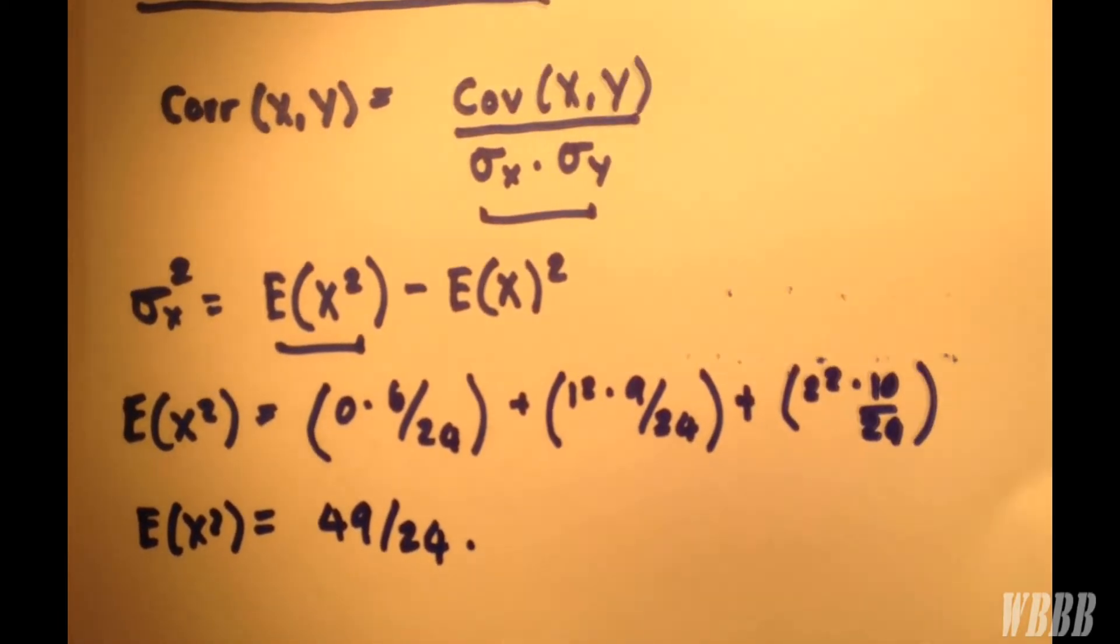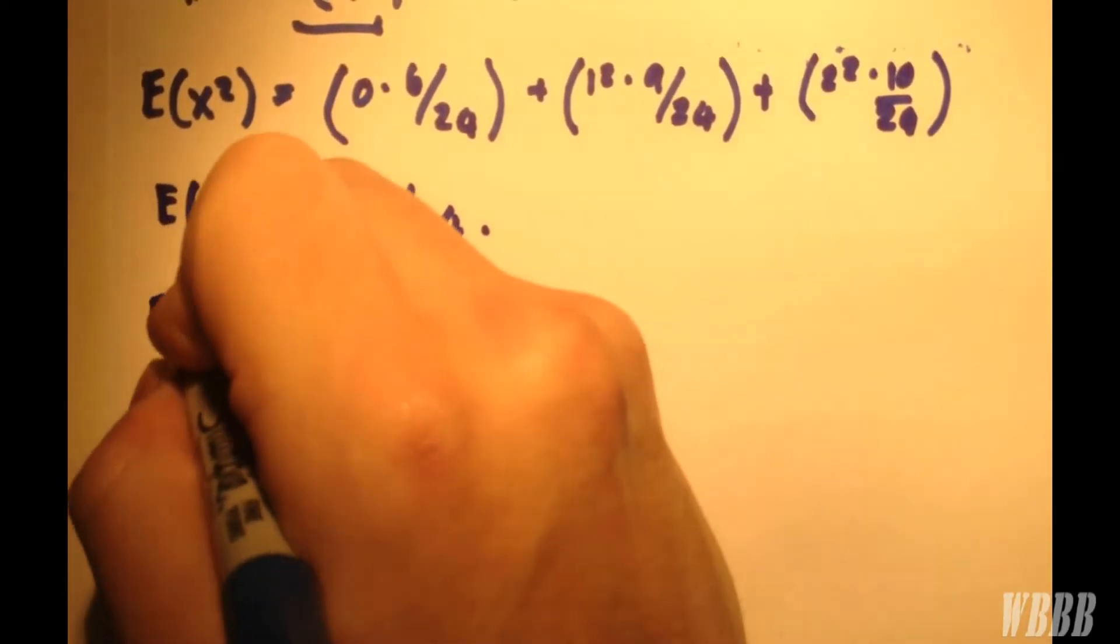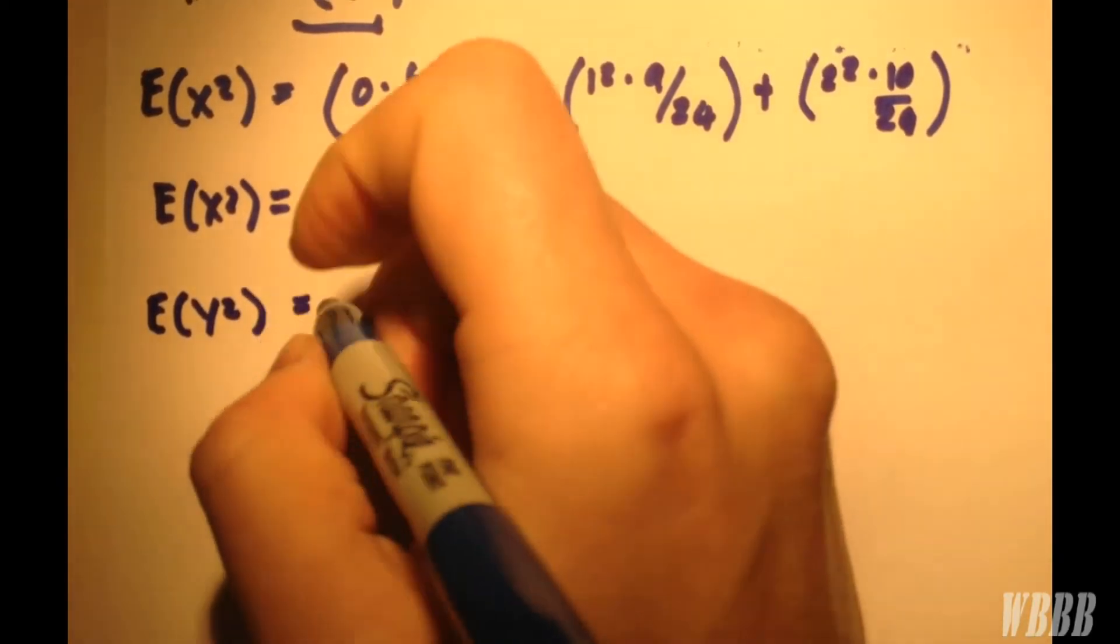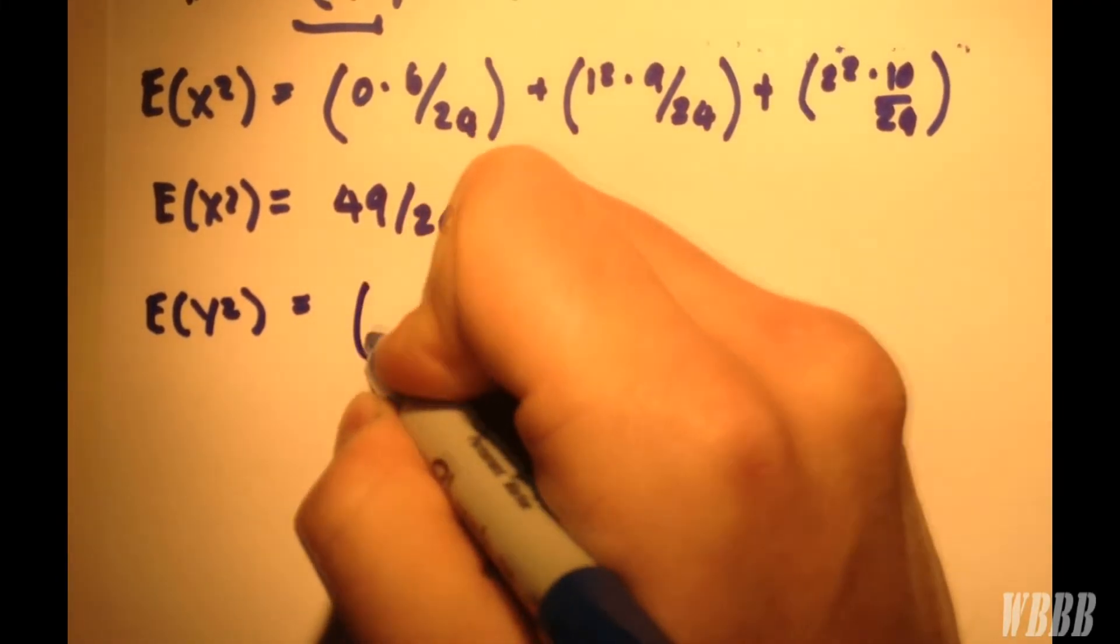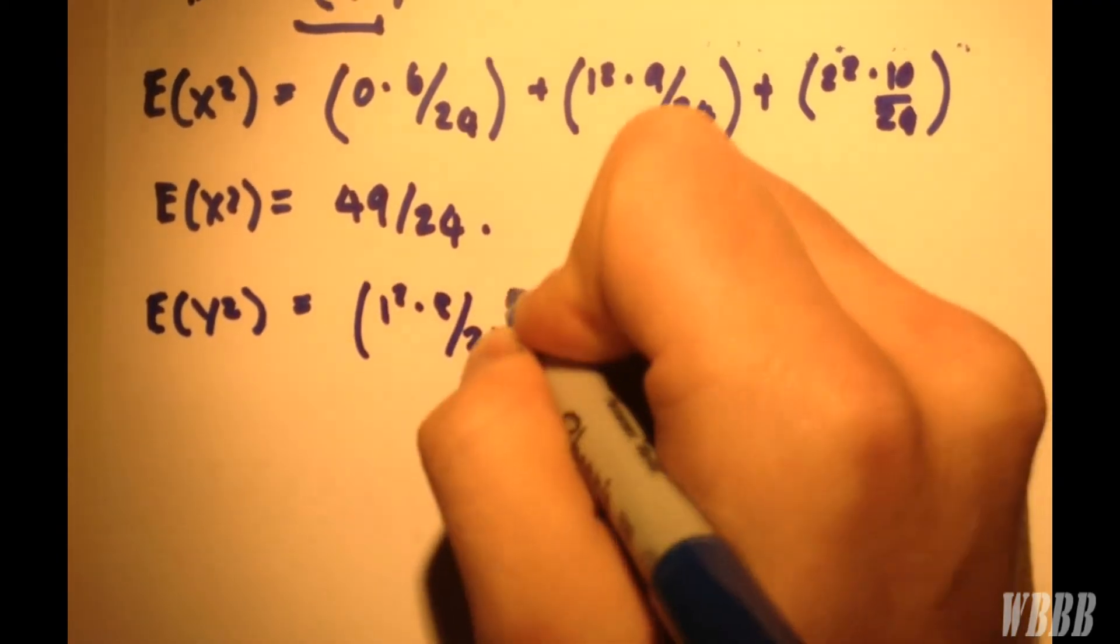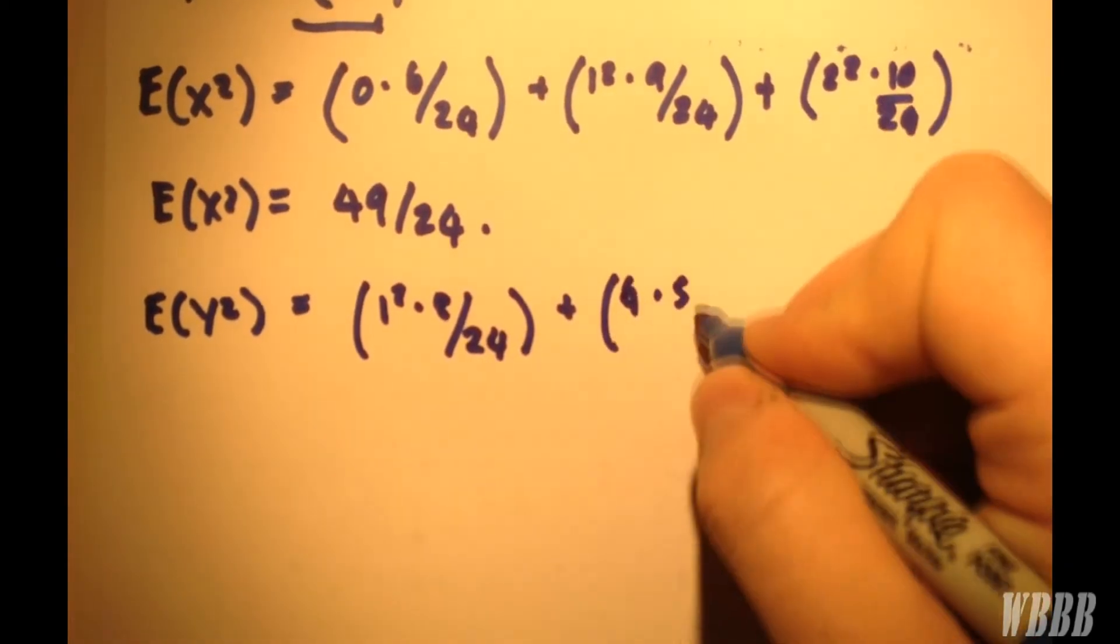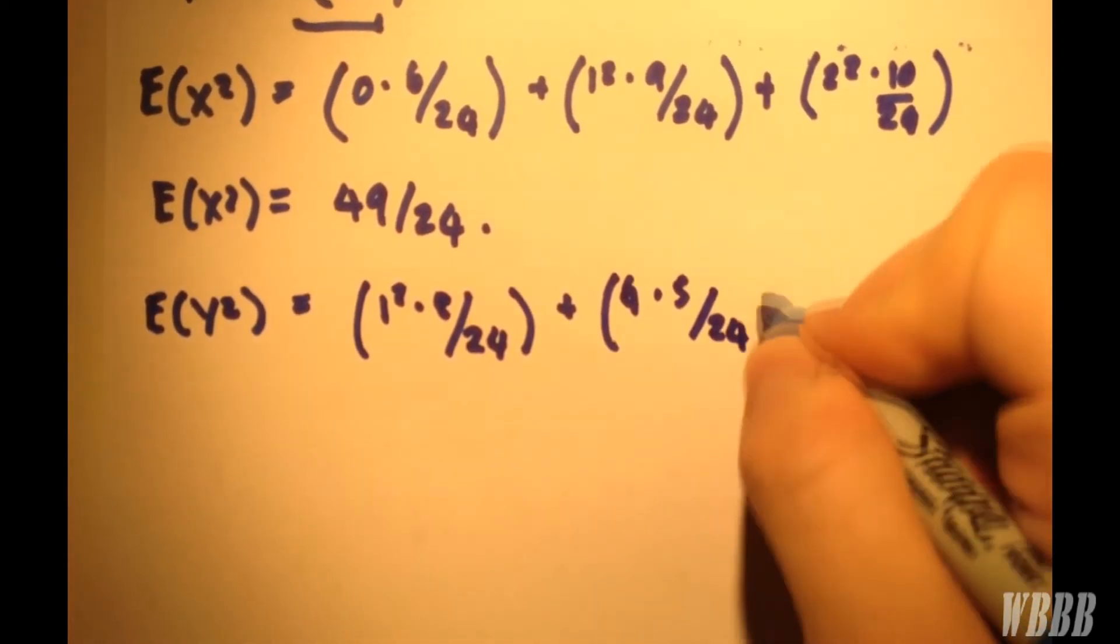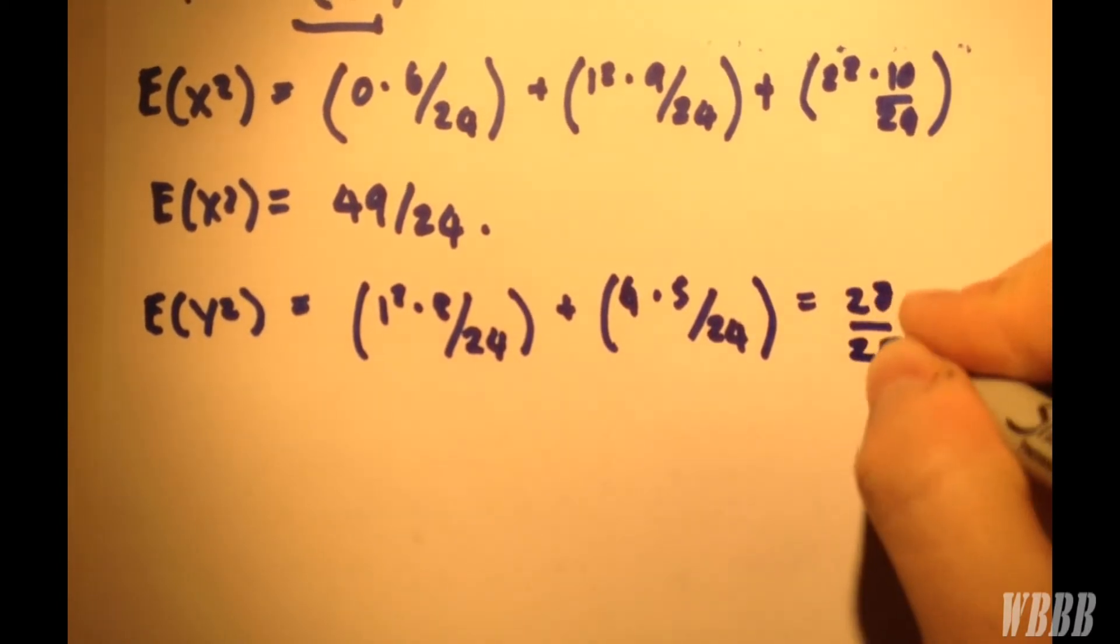And we follow the exact same method for the expected value of Y squared. I'll ignore the 0 this time. So we'll have 1 squared, which is obviously 1, 8/24, plus 2 squared, which is 4 lots. 5/24, which is equal to 28/24.